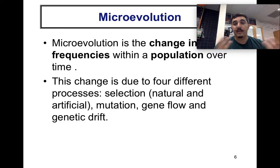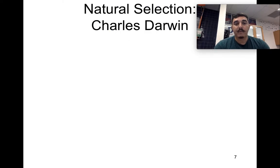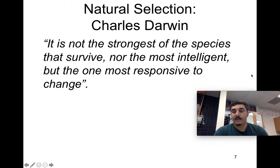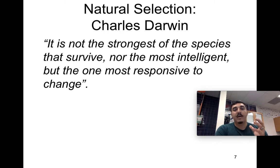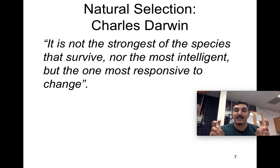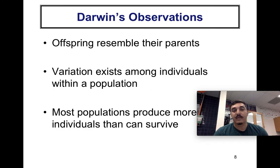On natural selection, Charles Darwin said it is not the strongest of the species that survives, nor the most intelligent, but the one most responsive to change. Those able to adapt are able to survive. As an example, during COVID, students who could adapt their routines were able to succeed — that's essentially natural selection in action.